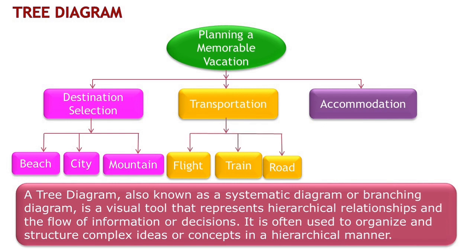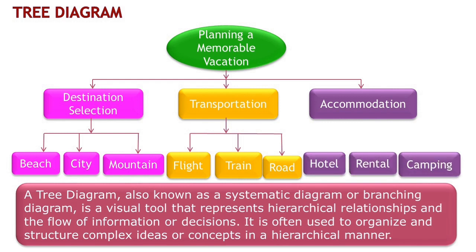Lastly, under accommodation, we can have branches for hotel, rental, and camping, representing various lodging choices. Thus, tree diagrams break down a goal or broad category into fine levels of detail.